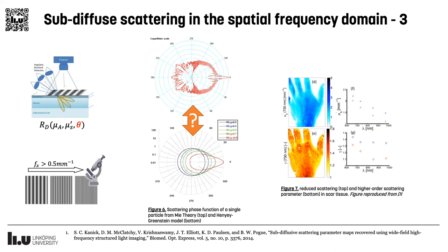Previous works have shown that it is possible to extract high-order parameters from SFDI measurements, which give information complementary to scattering. As can be seen in this example, the gamma parameters highlight the presence of scar tissue in the hand, which cannot be seen from the scattering measurements alone.